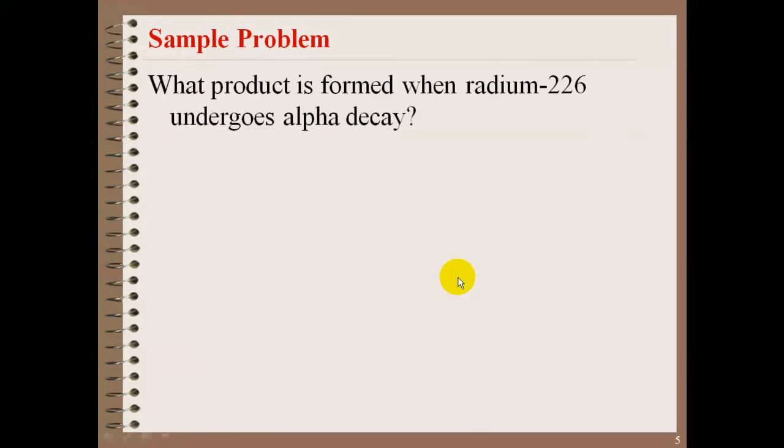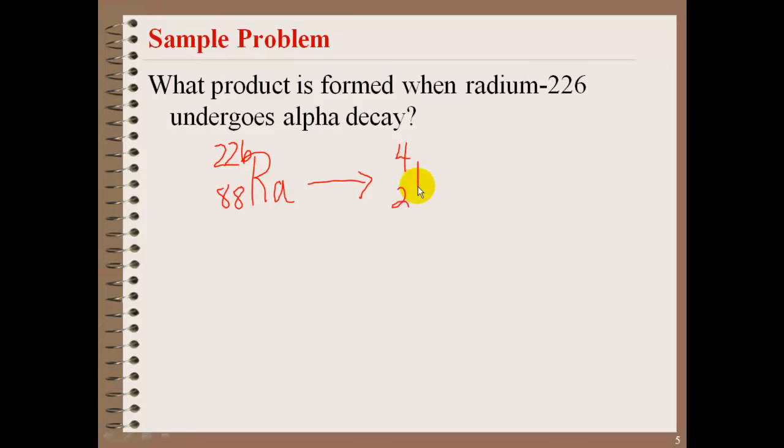So what product is formed when radium-226 undergoes an alpha decay? To do this, we're going to write what we already know. We know radium, which is Ra, and it's 226. Look up the proton number on the periodic table, and that is number 88. It goes through an alpha decay, so we know that the particle is 4-2-He, which is alpha.